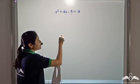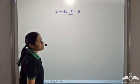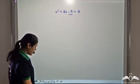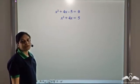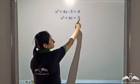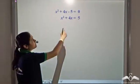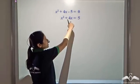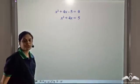First, take the negative 5 to the right hand side. We get x squared plus 4x equal to 5.